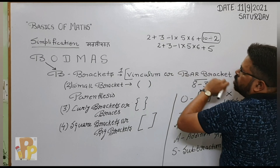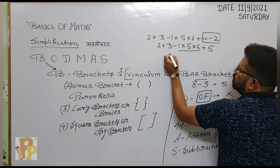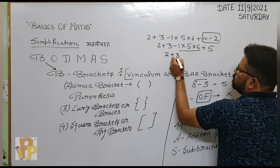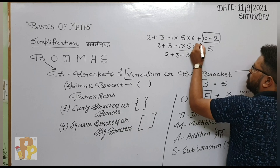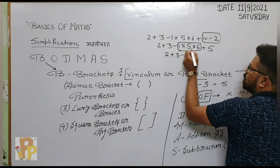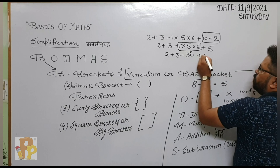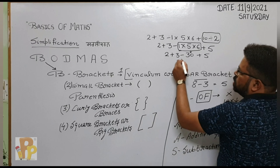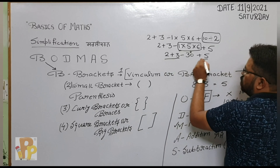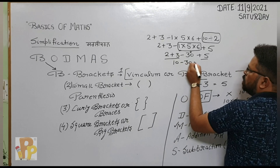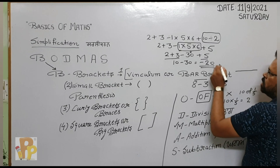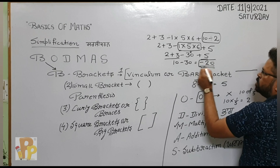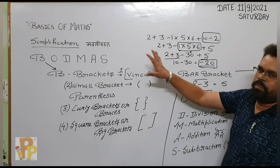Division के बाद multiplication: 1 × 5 = 5, 5 × 6 = 30. अब addition: 2 + 3 = 5, 5 + 5 = 10. Then subtraction: 10 − 30 = minus 20. So इस question का answer क्या हो जाएगा — minus 20. यह method आपको follow करना है simplification करते वक्त.